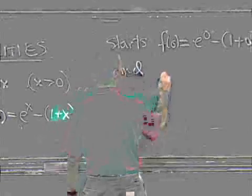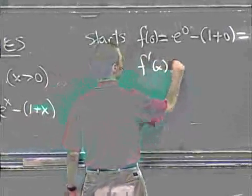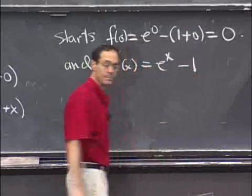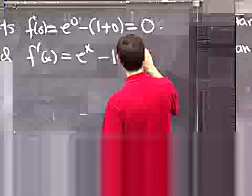And it keeps on going. f prime is e to the x, if I differentiate here, the 1 goes away, I get minus 1. That's the derivative of the function. And this function, because e to the x is bigger than 1 for x positive, is positive for x positive.